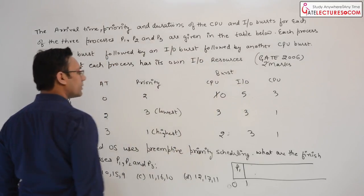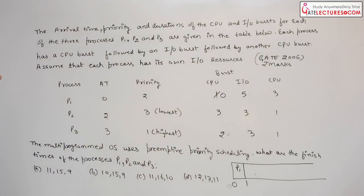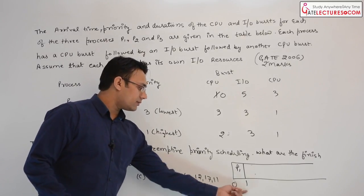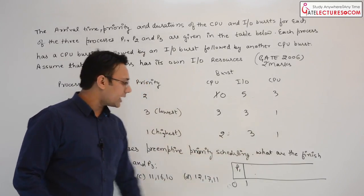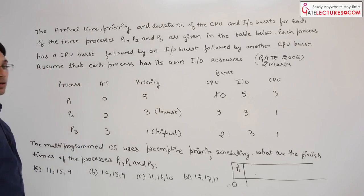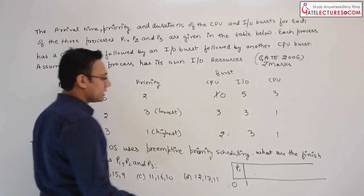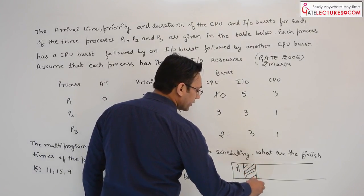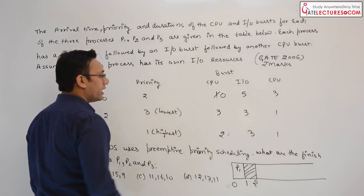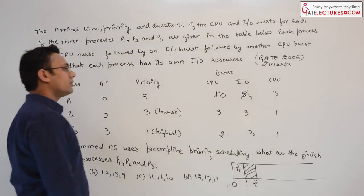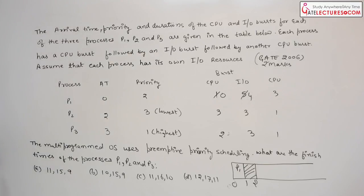After this, the CPU time of process P1 has already finished. After time unit 1, no process is available. The next new process is coming at time unit 2. Therefore, from time unit 1 to time unit 2 the system will remain idle. Till that time, process P1 has done its IO for 1 unit of time.